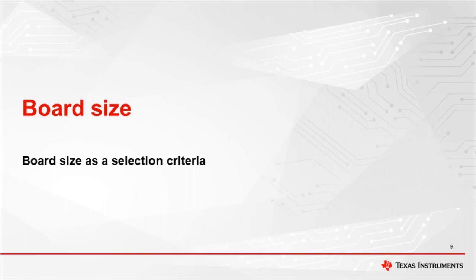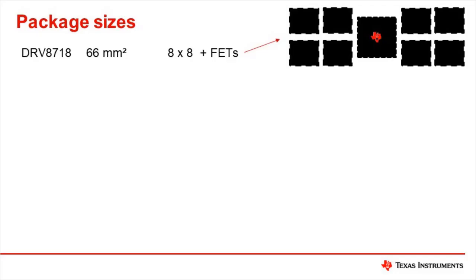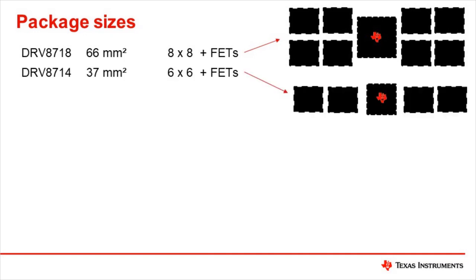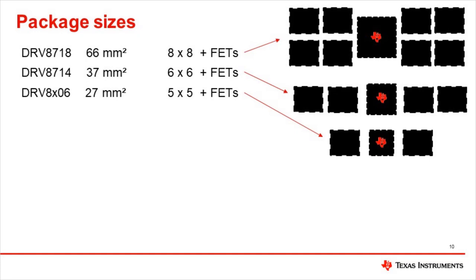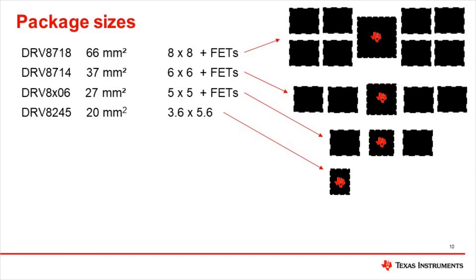In many applications, board size is a significant constraint. Let's look at how the different choices compare in terms of area on the printed circuit board. The DRV8718Q1 and external FETs provide eight channels of high current half-bridge drives; this can drive up to four independent bidirectional motors or up to seven motors with some constraints on simultaneous operations. The DRV8706Q1 and external FETs provide four channels of high current half-bridge drives, which can drive two independent motors or up to four single direction motors. The DRV8706Q1 with external FETs provides two channels of high current half-bridge drives, which can drive one bidirectional high current motor or two unidirectional motors. The DRV8245Q1 includes integrated drive FETs to control a bidirectional motor with a maximum current of 32 amps.